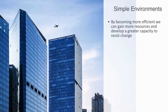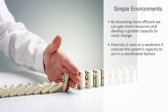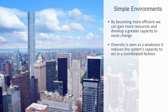Within such a strategy, diversity is seen as a weakness. It reduces the system's capacity to act in a coordinated fashion in removing all possible failures at their source. In such an approach, there is no distinction between the system and its parts. As the saying goes, what is good for General Motors is good for America. In such a model, major components, such as corporations or financial institutions, are the system, and we simply can't let them fail.